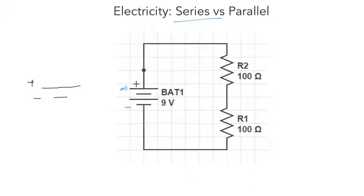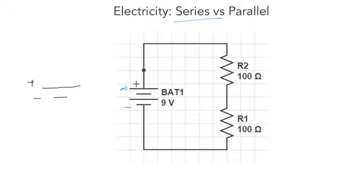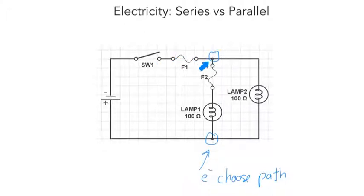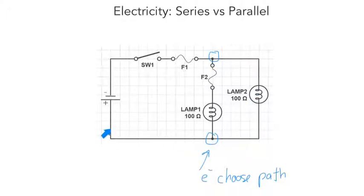The next image we're going to look at is a parallel circuit, and you'll be able to see the differences right away. The first thing you should notice is the branch point — this is where your electrons can choose their path. We have our power supply; electrons travel through the switch, through a fuse, and then reach the branch point. From there, electrons can either go down through the second fuse and through the light bulb and back to the power supply, or continue along the other path through the light bulb and back to the power supply.